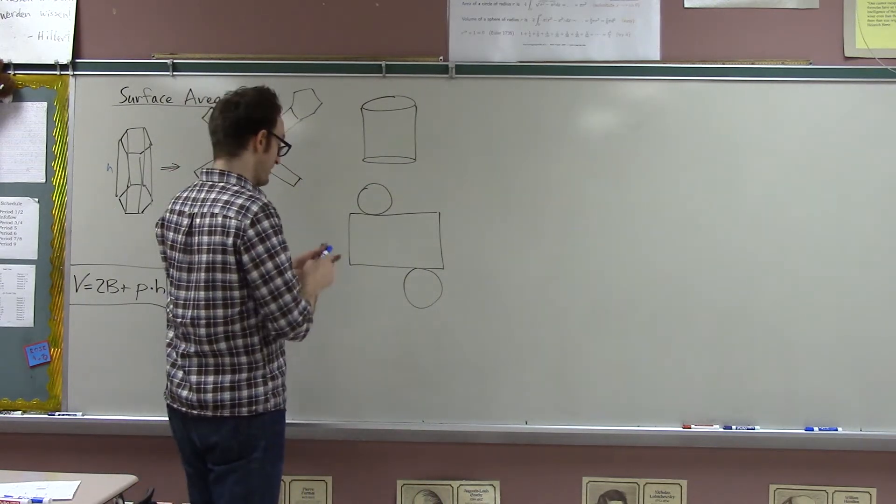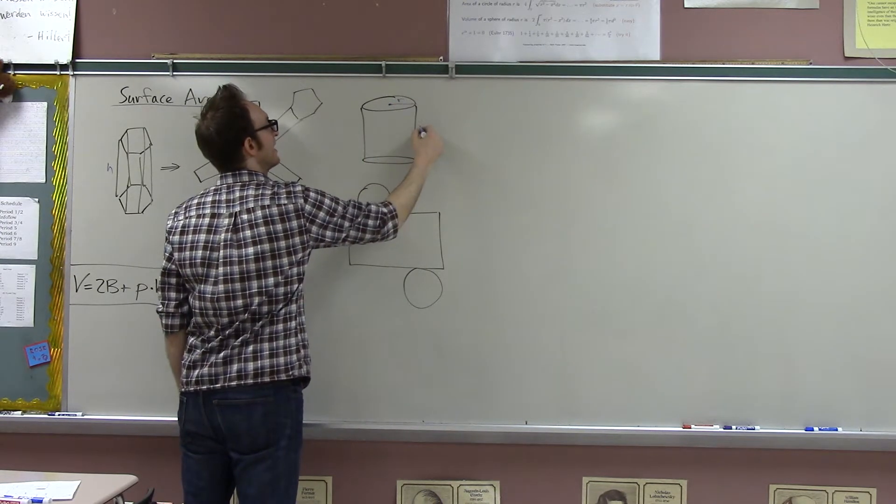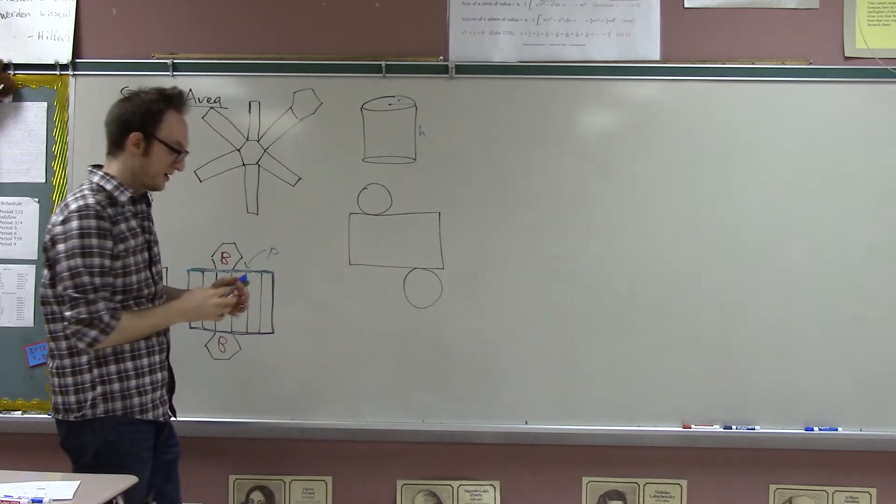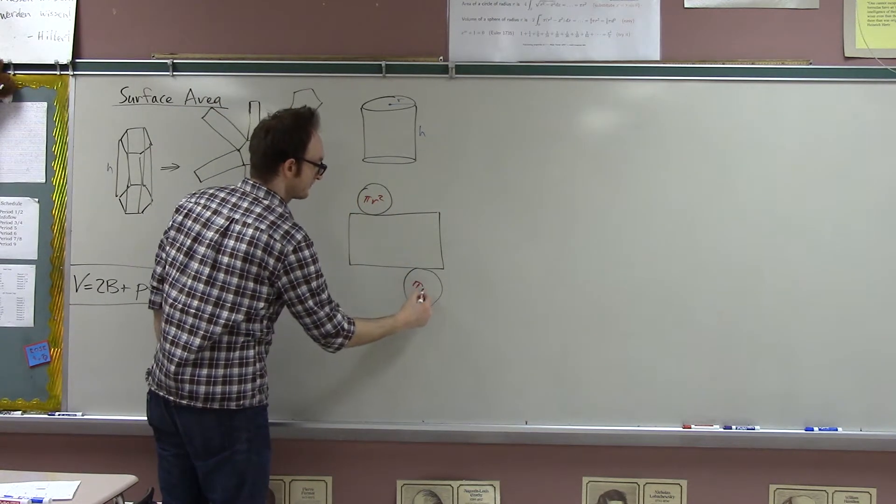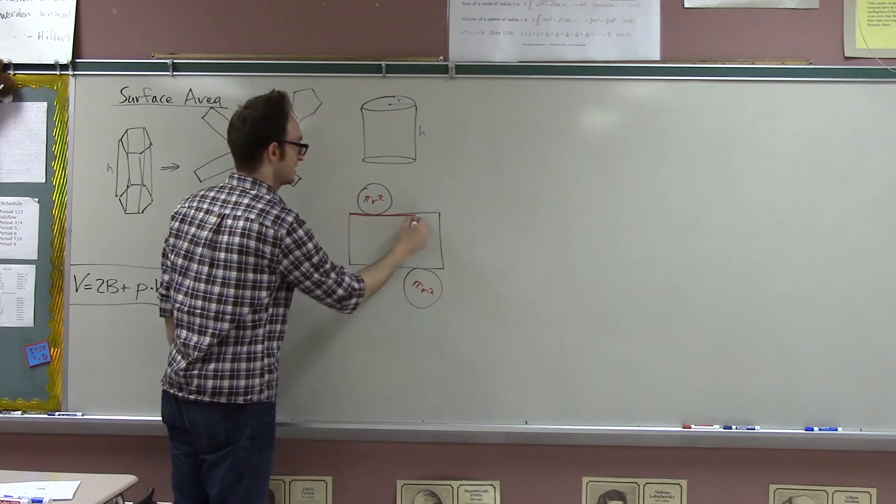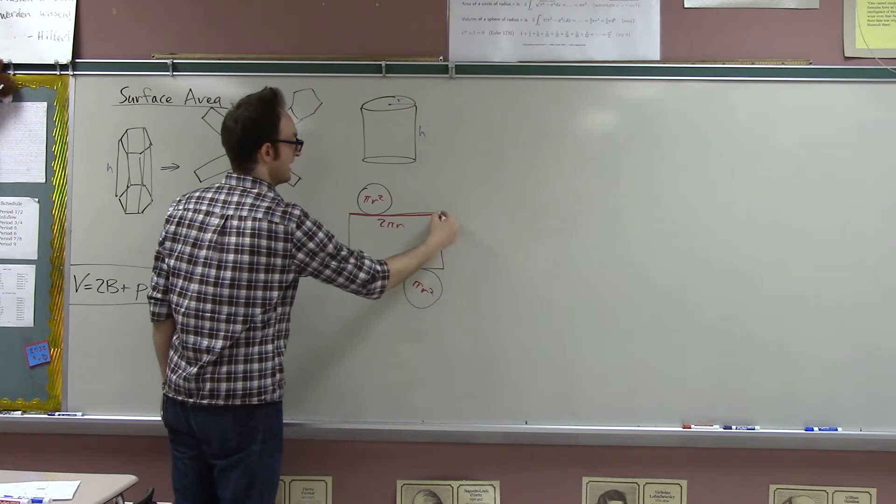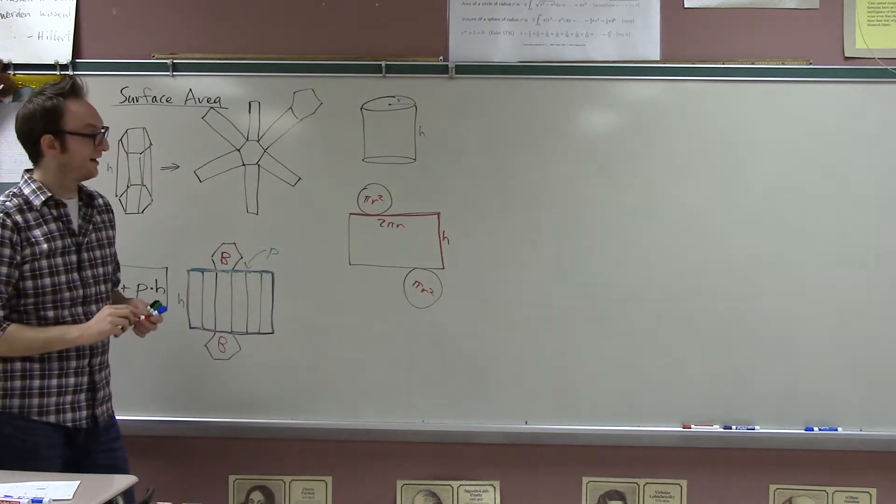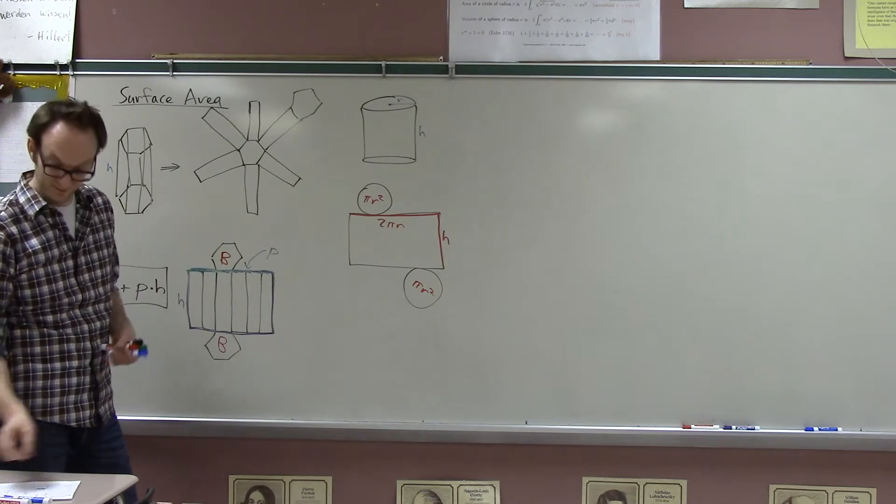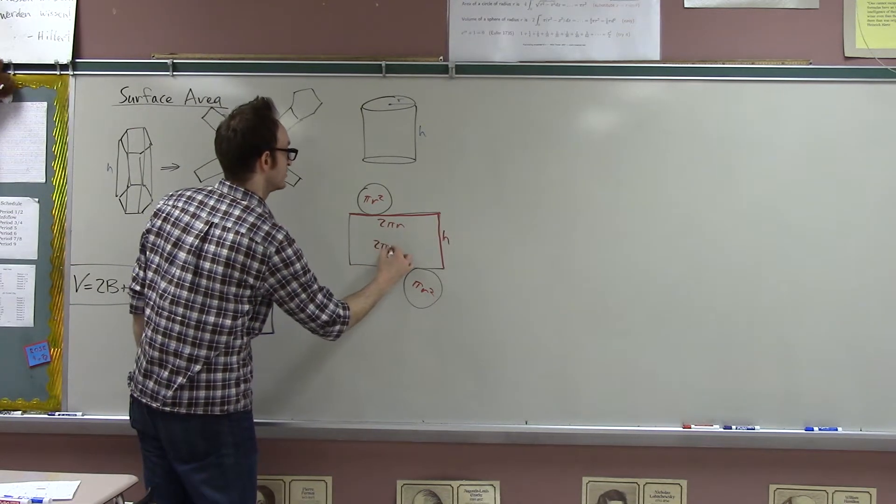And so if I begin with a cylinder with radius r and height h, then what kind of object is produced? Well, each of these circles has area pi r squared. This dimension is the circumference of the circle, 2 pi r, and this dimension is the height of the cylinder. Thus, making the area of this thing 2 pi r h.